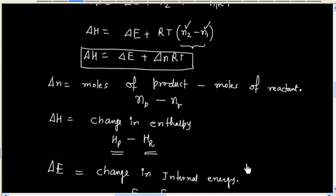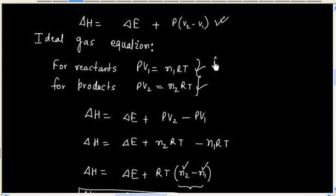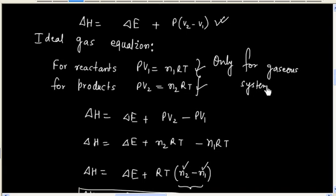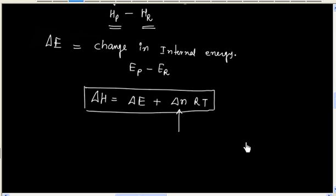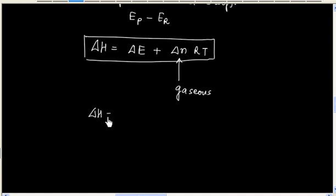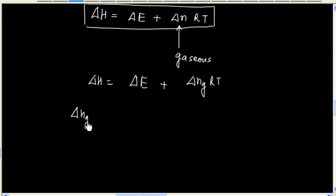One important point: we can apply the ideal gas equation only for a gaseous system. So N1 and N2 denote moles of reactants and products only for gaseous species. Therefore ΔN is the difference in moles of gaseous products minus gaseous reactants, which is why we write ΔNg·R·T.